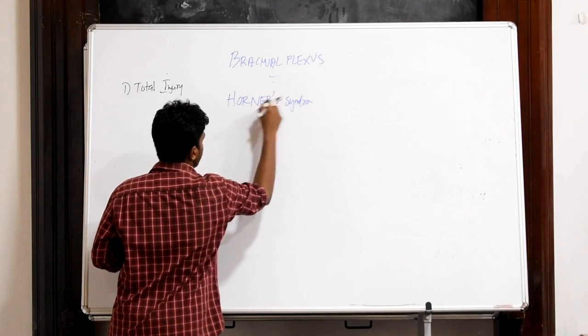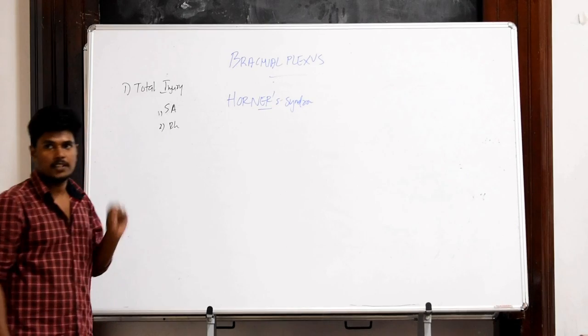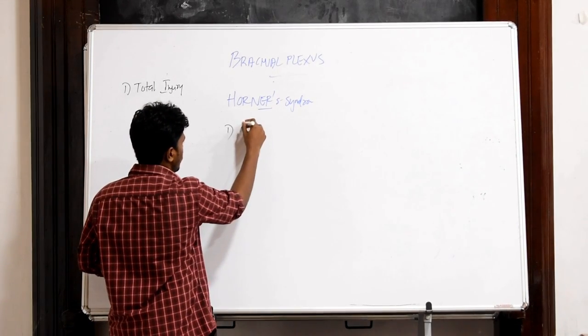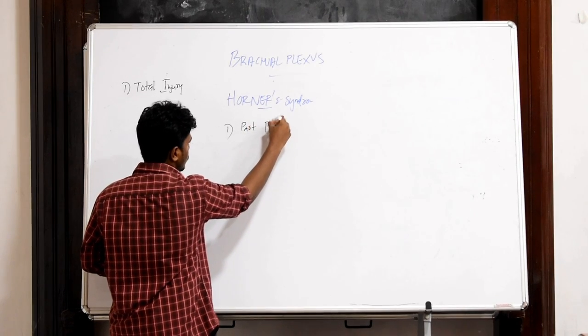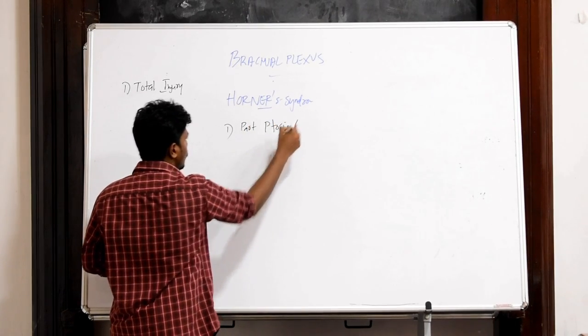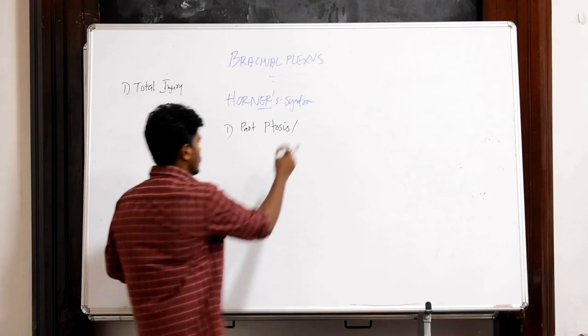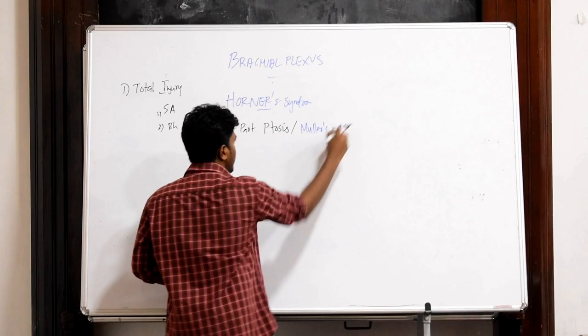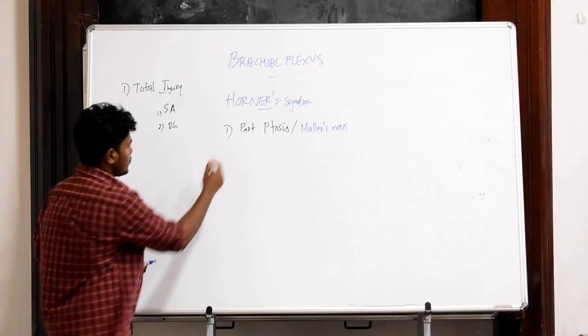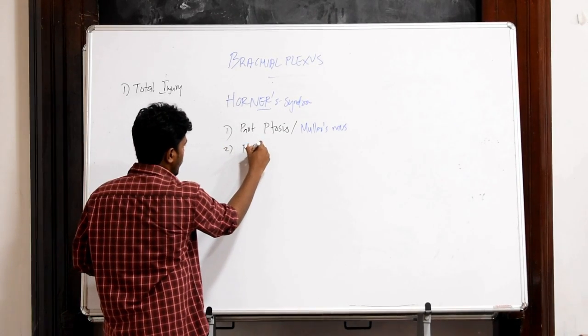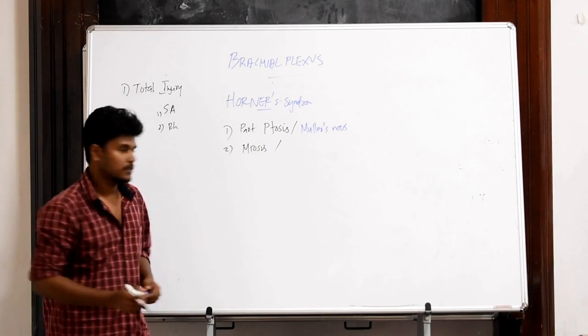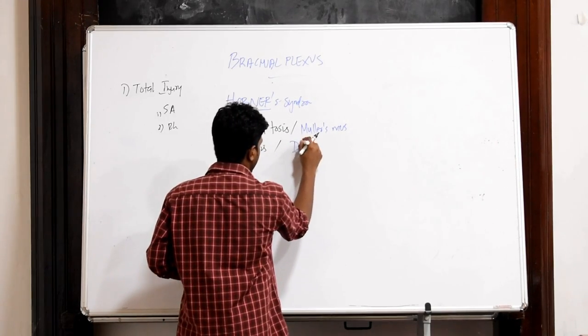Horner's syndrome is due to damage to the ventral rami of T1 spinal segment in the brachial plexus. The features are: first one is partial ptosis or the paralysis of the Müller's muscle leading to the drooping of eyelid. Second one is miosis or constriction of pupil due to paralysis of dilator pupillae.